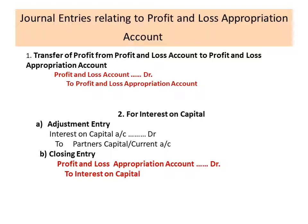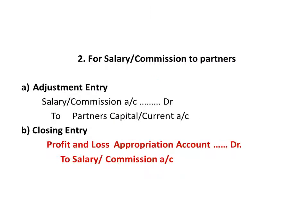The first entry is known as adjustment entry and the second is the closing entry. Similarly, for salary and commission to partners there are two entries: adjustment entry and closing entry. The adjustment entry goes in capital accounts, whereas the closing entry goes in profit and loss appropriation account. The adjustment entry is salary or commission account debit to partner's capital or current accounts, and the closing entry is profit and loss appropriation account debit to salary or commission account.